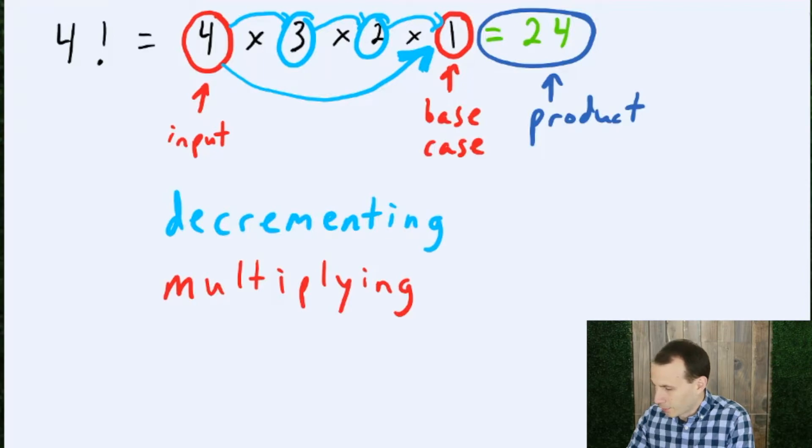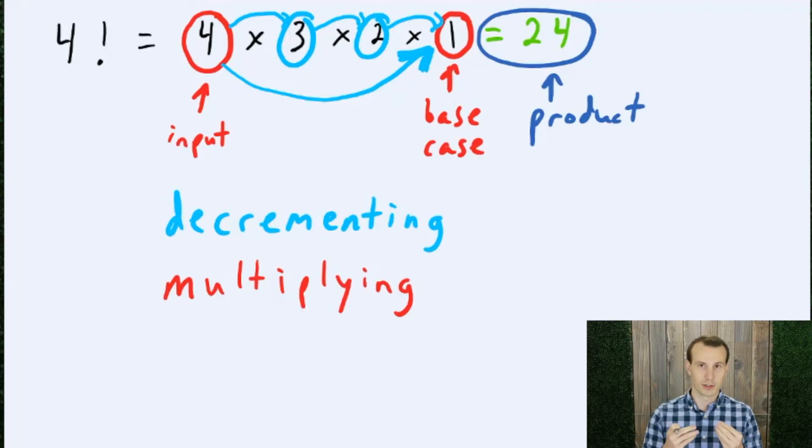So, I'm going to propose that we structure this just as we structured our repeater solution, which is, in that case, we had a counter or a length that was tracking our base case.